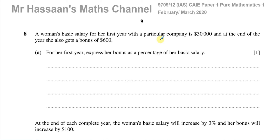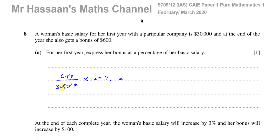The bonus is $600 and the basic salary is $30,000. To express one quantity as a percentage of another, we make a fraction: $600 divided by $30,000, then multiply by 100. We cancel two zeros from each — six over three is two — giving us 2%. Two percent is the percentage that her bonus is of her basic salary.